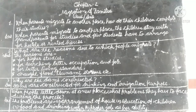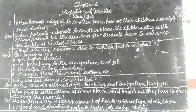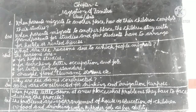Second question: what are the reasons due to which people migrate? The reasons are: for higher studies, for searching better occupation and job, for better living standards, and due to natural disasters like drought, flood, tsunami, storms, etc.